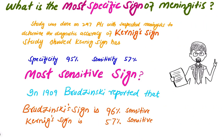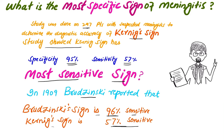What is the most specific sign of meningitis? A study done on 297 patients with suspected meningitis showed that Kernig's sign is 95% specific and 57% sensitive. And which is the most sensitive sign? In 1909, Brudzinski reported that Brudzinski's sign is 96% sensitive, while Kernig's sign is 57% sensitive. So Brudzinski's sign is the most sensitive test and Kernig's sign is the most specific test for meningitis.